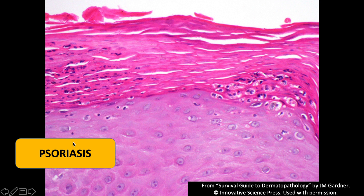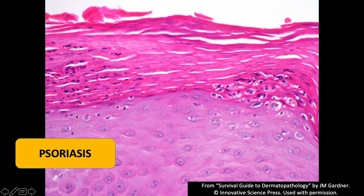Psoriasis also has neutrophils in the stratum corneum — a very characteristic finding that is usually present. These are sometimes called Munro's micro abscesses. There has to be a fancy eponym for everything in derm and dermatopathology, usually several of them for each disease. And again, the granular layer is gone — it's just wiped out.